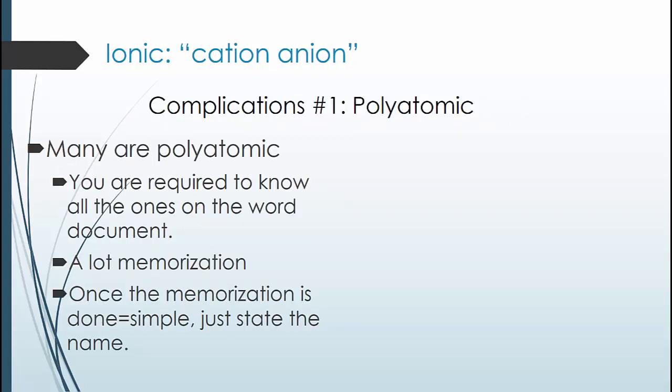Now let's add in a typical complication. Often one or both ions are polyatomic. This means that more than one atom makes up the ion. I've given you a list of every one of these that you should know in the Word document online. It doesn't actually complicate the naming that much. Once you have the list memorized, you're all set, ready to go, and you just fill in the name. However, the memorization itself is quite arduous.